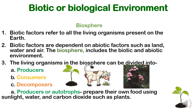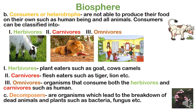Producers, or autotrophs, prepare their own food using sunlight, water, and carbon dioxide — such as plants. These are the ones that make their own food. Consumers, or heterotrophs, are not able to produce their own food — such as human beings and all animals. Consumers depend on producers and cannot make food on their own.